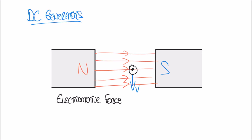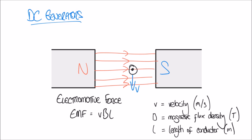The size of the electromotive force produced in the conductor is determined by this formula: EMF equals V times B times L, where V is a lowercase letter, B is a capital, and L is lowercase. V stands for velocity measured in meters per second, B is the magnetic flux density measured in Tesla, and L is the length of the conductor passing through the magnetic field, measured in meters.